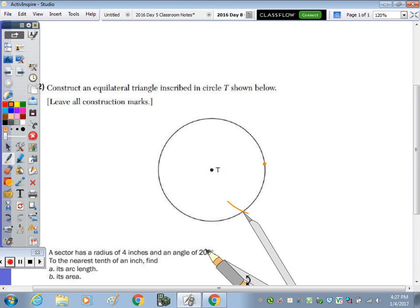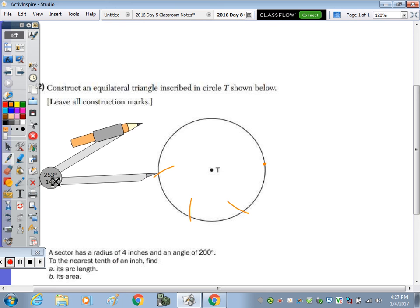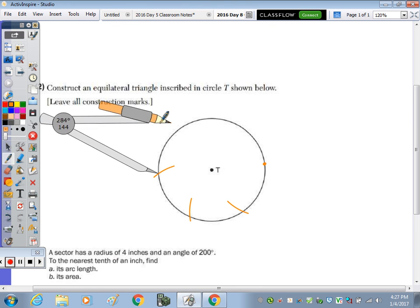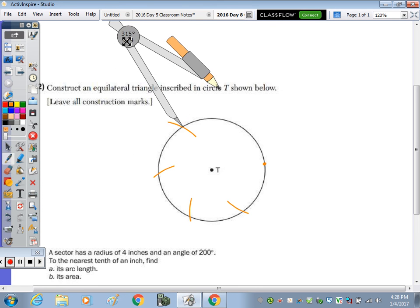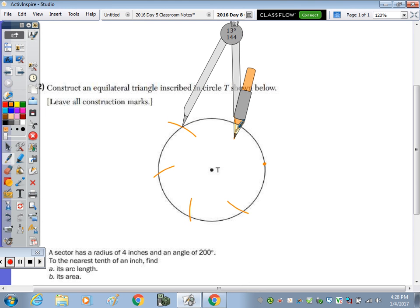So one, two, three, four, five, and then here's our... I mean, we don't need an arc, but now we have our six points.